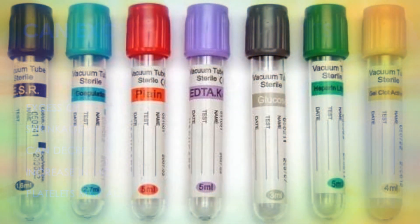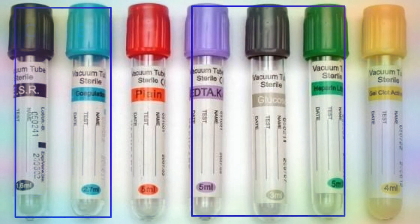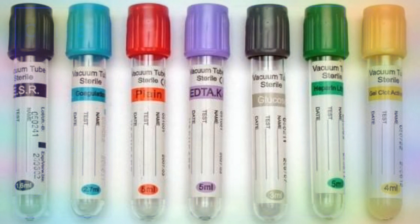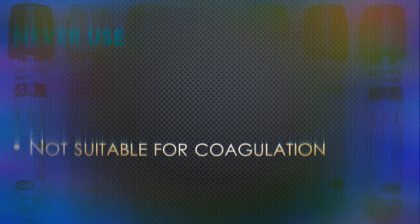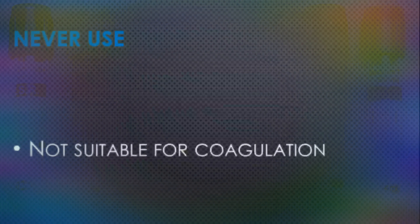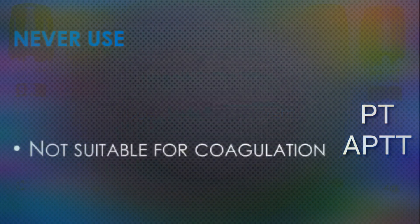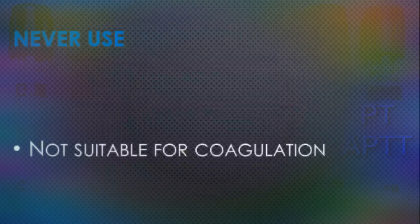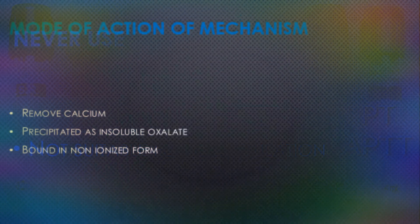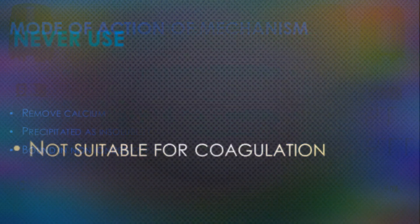Nowadays, different types of evacuated tubes already contain the exact amount of anticoagulant — for example, EDTA in lavender cap tubes, trisodium citrate in black tubes, and heparin in green tubes. Importantly, EDTA is not suitable for investigation of coagulation problems and should not be used for estimating prothrombin time, because EDTA chelates calcium (factor IV), and without calcium the coagulation results are unreliable.